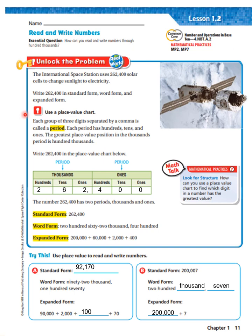Use a place value chart. Each group of three digits separated by a comma is called a period. Each period has hundreds, tens, and ones. The greatest place value position in the thousands period is hundred thousands. So here's a period — hundreds, tens, ones — and then here's another period. So if we write 262,400 in this chart, we write 262 comma 400.